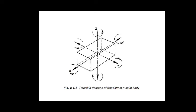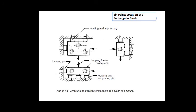Any solid body may have a maximum of 12 degrees of freedom — that is, translational motions in the X, Y, Z directions (plus and minus), and rotational motions (clockwise and anticlockwise), as shown in the figure. So 12 degrees of freedom: 3 axes X, Y, Z — plus and minus gives 6 — and the remaining are rotational about X, Y, Z axes — clockwise and anticlockwise — totaling 12 degrees of freedom. By properly locating, supporting, and clamping the blank, all its degrees of freedom are to be arrested.